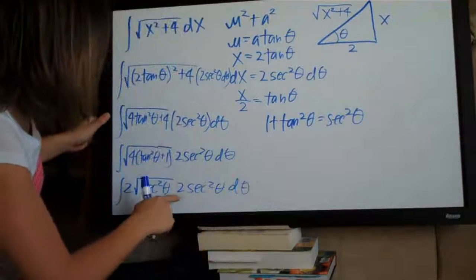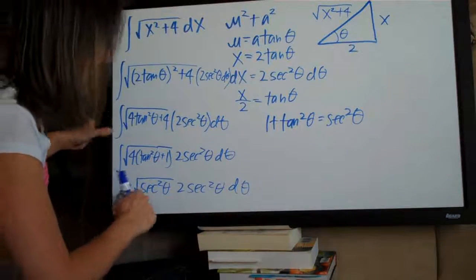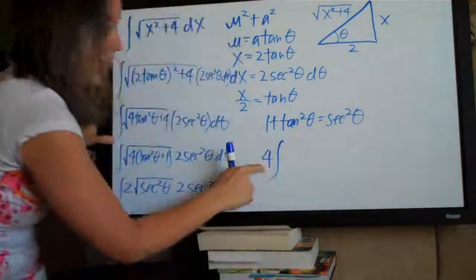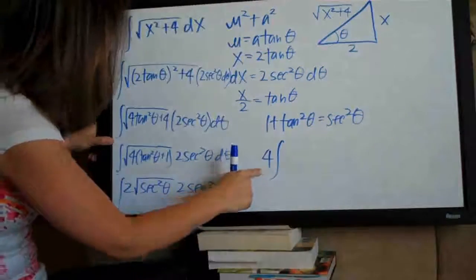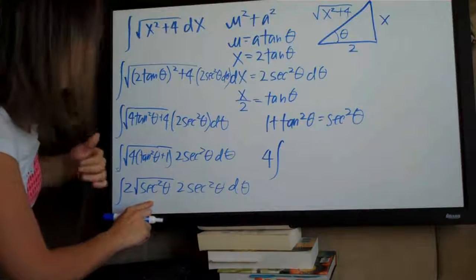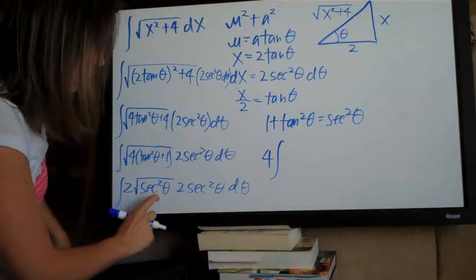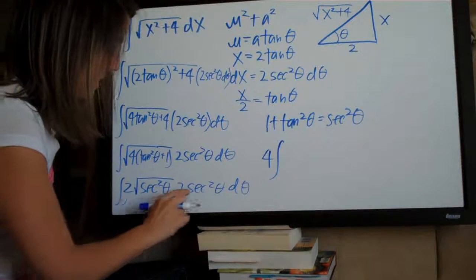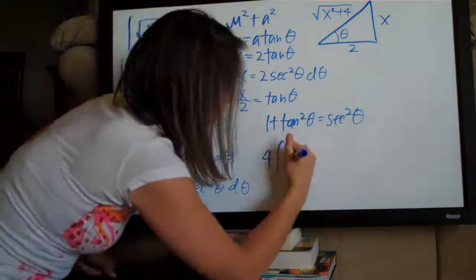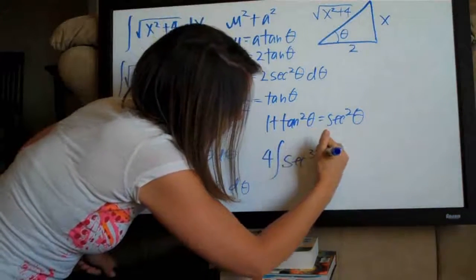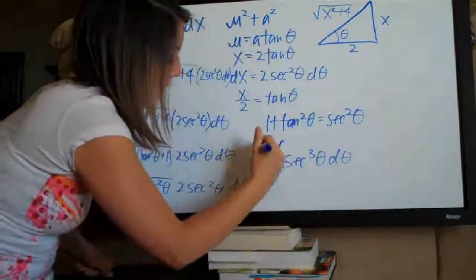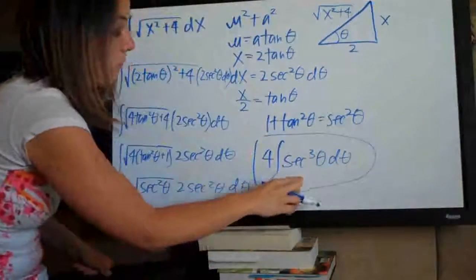So we have 2 times the square root of secant squared theta, times 2 secant squared theta d theta. That gives us 2 times 2 which is 4, pulled out in front of the integral. The square root of secant squared theta is just secant theta, so multiplying secant by secant squared gives us secant cubed theta d theta on the inside. That is our simplified integral.